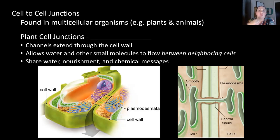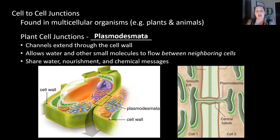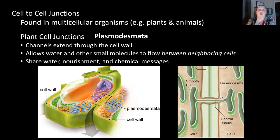When talking about multicellular organisms like plants and animals, we need some sort of cell junctions in order to communicate between one cell and the next. In plant cells, because they have a cell wall, they have a special kind of cell-to-cell junction called plasmodesmata. These plasmodesmata are channels that extend from one cell wall to the next, allowing water and very small molecules to move to neighboring cells. This allows for sharing of water, nourishment, and even chemical messengers.